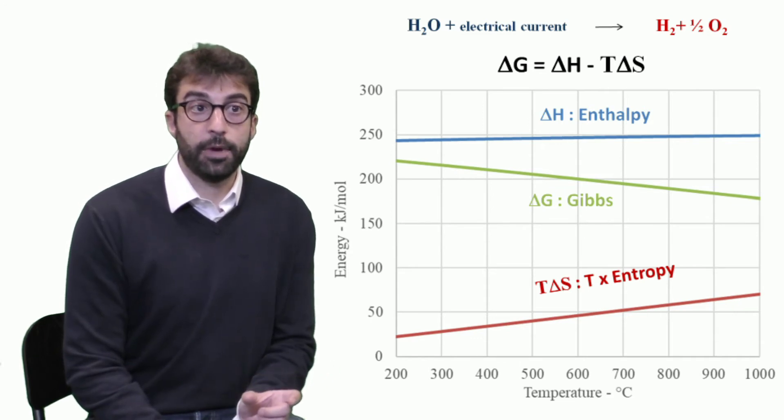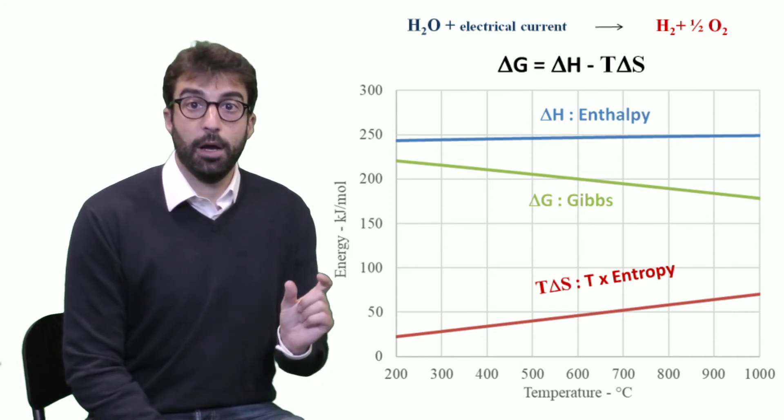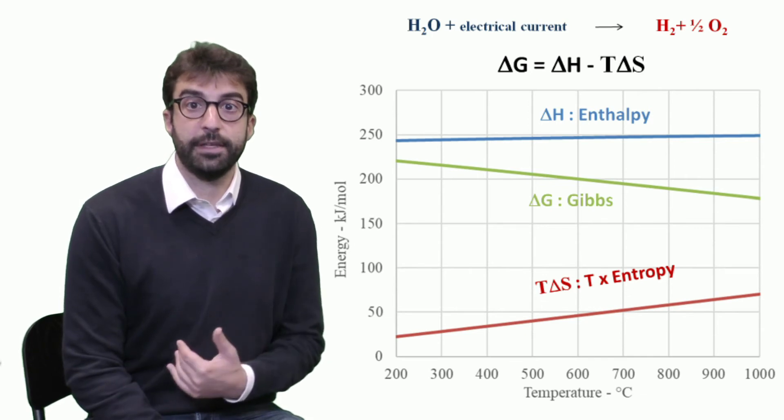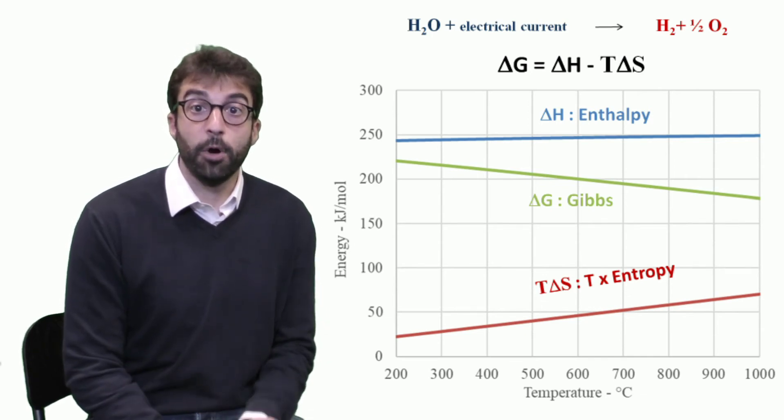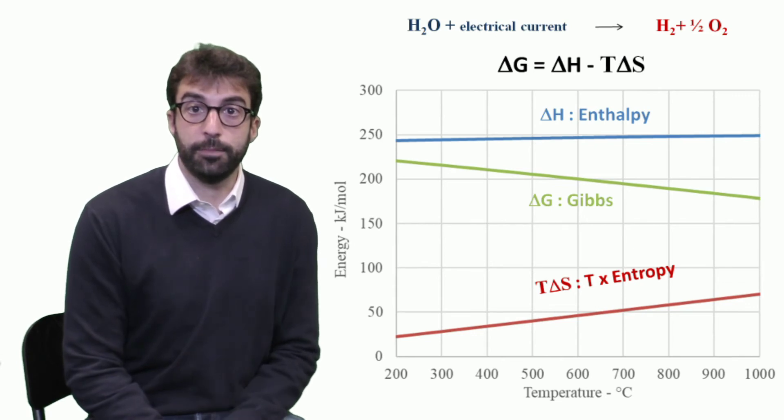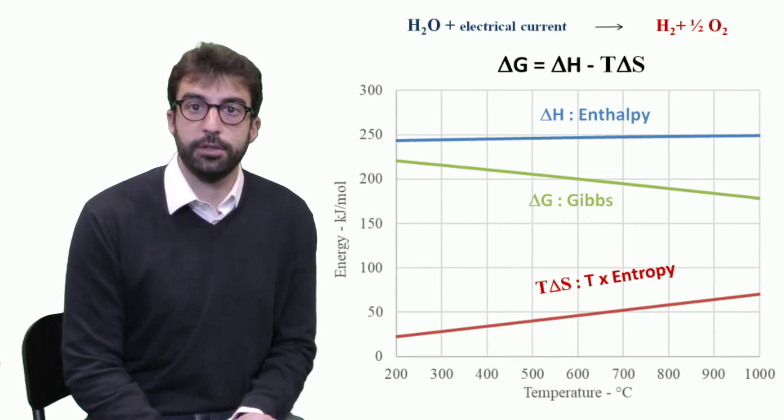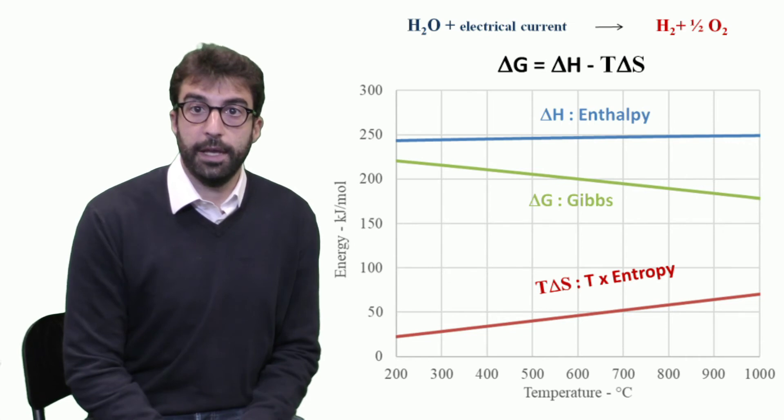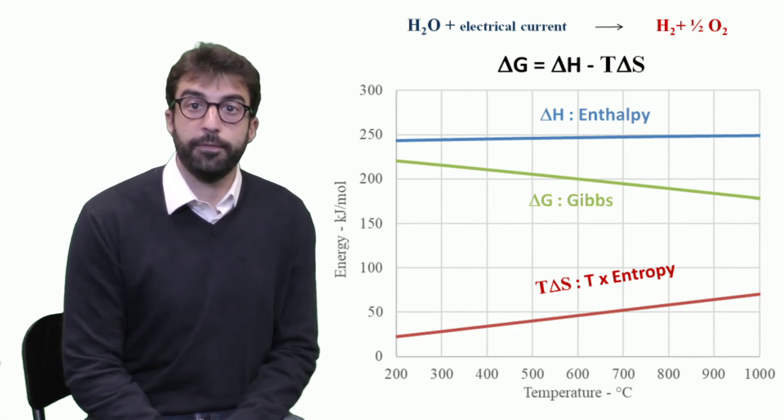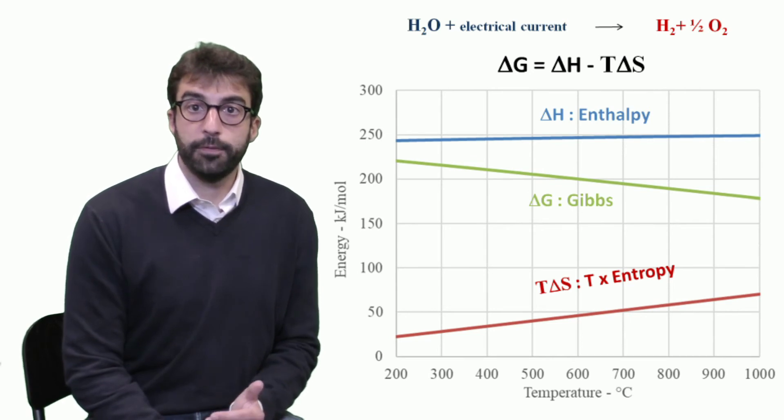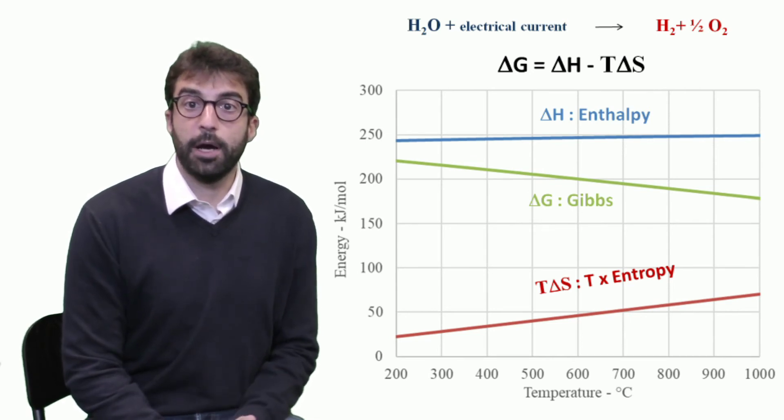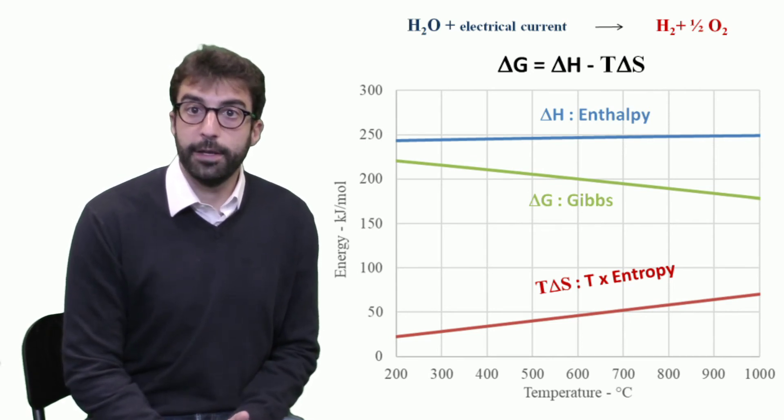So if we go back to the Gibbs reaction, we see that the Gibbs energy decreases. It means that the amount of work that is necessary for the reaction decreases with increase of temperature. So here is mainly the advantages of operating the electrolysis at high temperature, of moving from water electrolysis to steam electrolysis. The amount of total energy is higher, but the amount of work is lower.